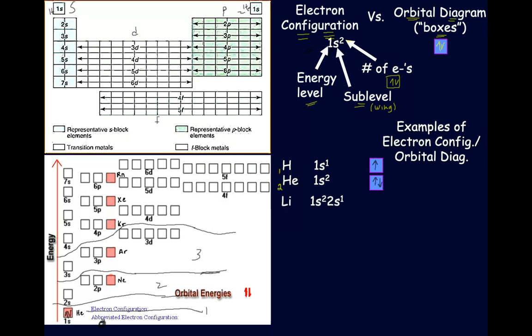For lithium, atomic number 3, we can't fit that extra electron in box number one. So we go: 1S2, and then a 2S1 — we enter the second energy level for the first time. For beryllium, atomic number 4, we go 1S2, 2S1, and now we fill in the second electron to make it 2S2. The arrows in the boxes can be half arrows or full arrows — either way, the idea is the same.